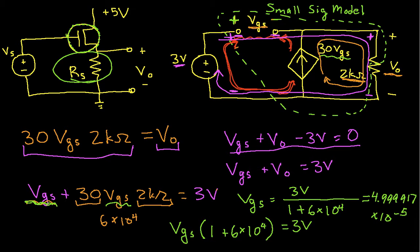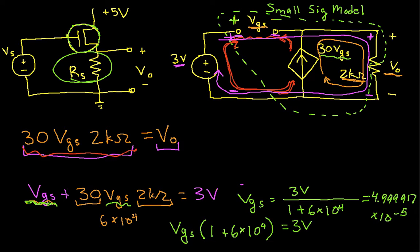So now let's clear out a bit of space. We can go back to this equation, this guy right here, and find V out. We have V out is 6 times 10 to the 4th, that's what we decided this guy times this guy is, times VGS. And if I work this out... I get that V out is equal to 2.99995 volts.